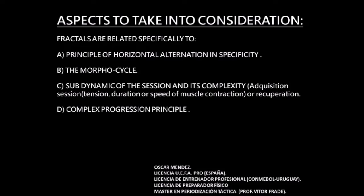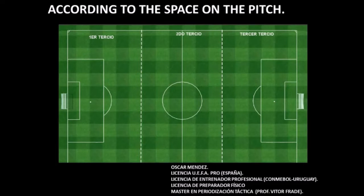The complex progression principle means we're going to progress during the week, the month, and the year always into more complexity. Before, in the first part, we talked about scales — individual, group, sectoral, intersectoral, and collective. Now we're going to add complexity by focusing on the space on the pitch. We're going to divide the pitch into three thirds and start focusing on — for example — one scale in the first third, another scale in the second third, or another in the last third, and we can change from one third to the other.